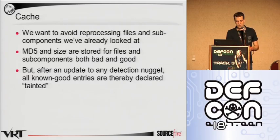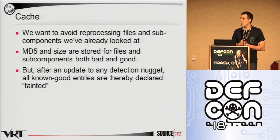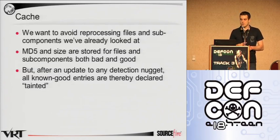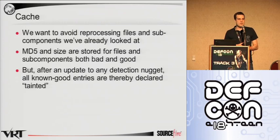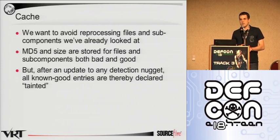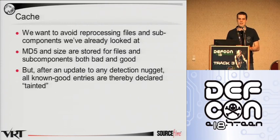We do caching to avoid reprocessing files that we don't need to. We can also use it in the case of the local cache for some blocking capabilities. We store MD5 and size, and you can theoretically use any signature. The thing is that once you've added a new detection nugget to the system or you've issued any defense update, then all entries that we previously determined to be good — that are cached as good, or where we haven't found anything wrong with them — are marked as tainted.